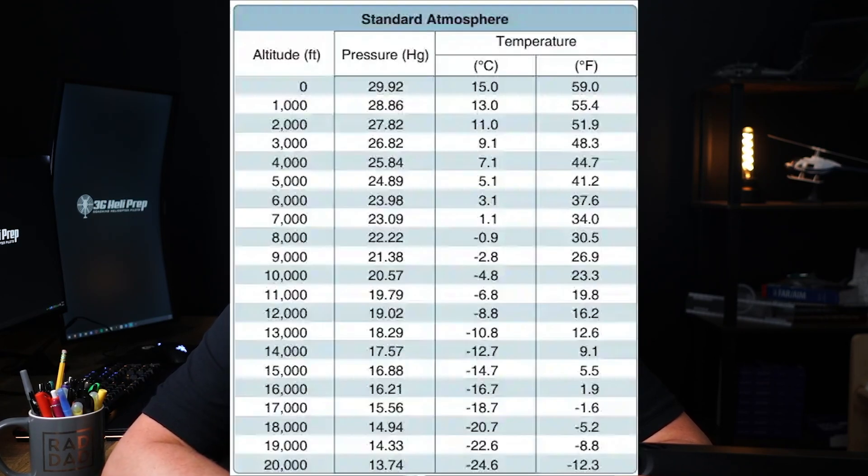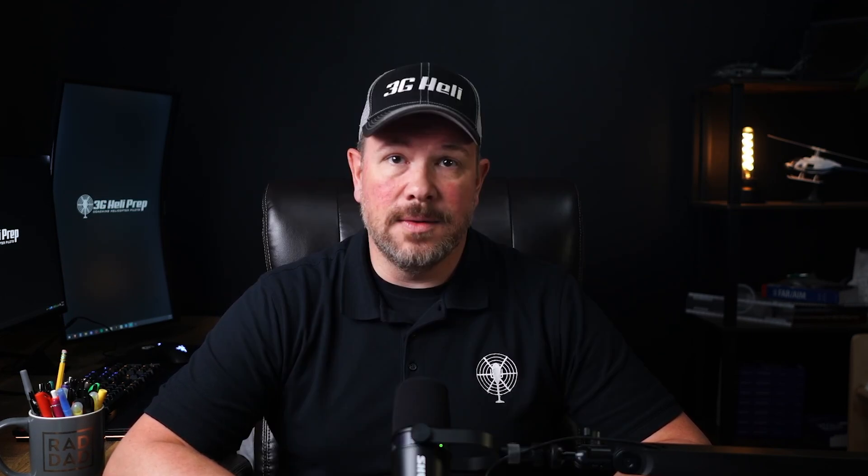International Standard Atmosphere lapse rate: under ISA conditions, the temperature typically decreases at a rate of 2 degrees per thousand feet, or 6.5 degrees Celsius per 1,000 meters. This rate is considered standard and is used as a baseline in aviation. When pilots plan their flights, they often compare the actual temperatures they encounter with this standard lapse rate to assess how atmospheric conditions might affect their flights.